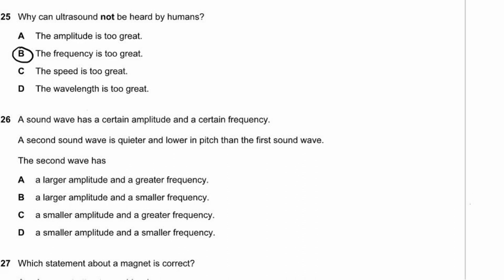Question 26. A second sound wave is quieter and lower in pitch than the first. Quieter means smaller amplitude. Lower pitch means lower frequency. So the second sound wave has a smaller amplitude and a smaller frequency. Option D.